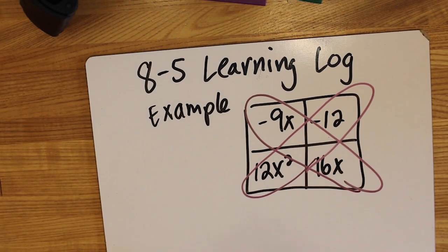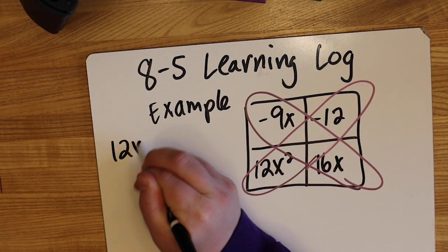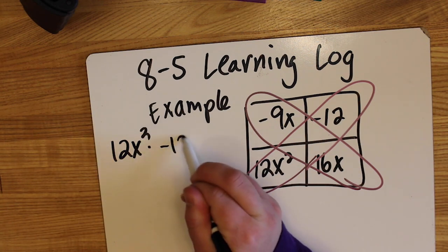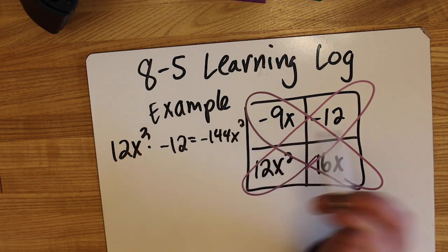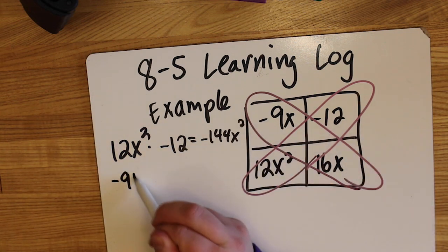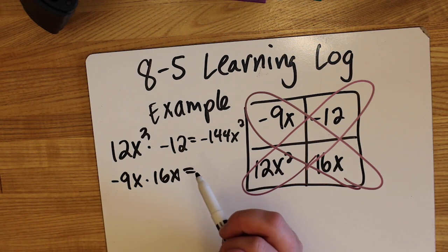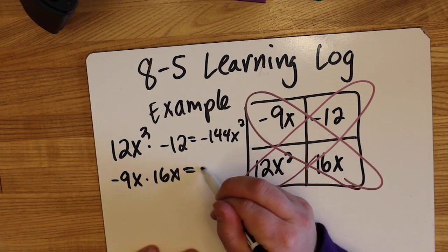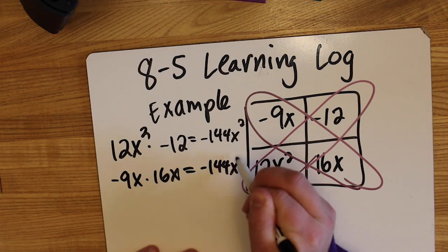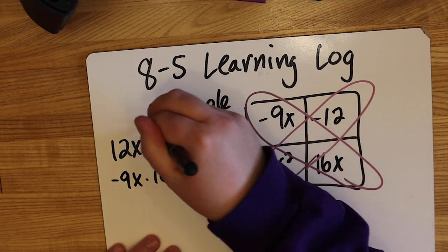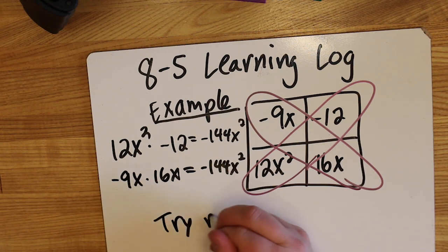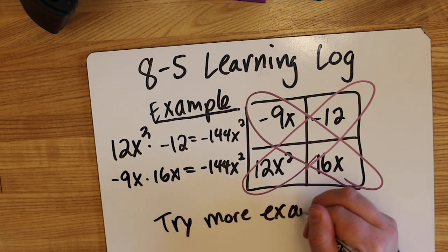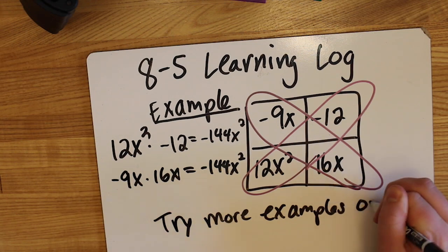The learning log says, does Casey's pattern always work? Verify that her pattern works for all of the 2x2 generic rectangles in problem 8-3. Then describe Casey's pattern for the diagonals of a 2x2 generic rectangle in your learning log. Include an example. On the screen, I'm doing an example right now. You can try more examples on your own and record it in your notes for the learning log.